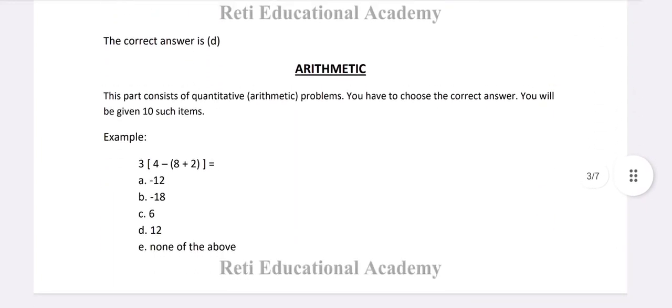Arithmetic. This part consists of quantitative arithmetic problems. You have to choose the correct answer. You will be given 10 such items.